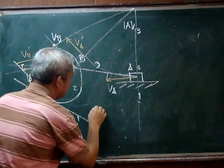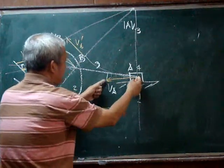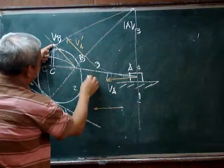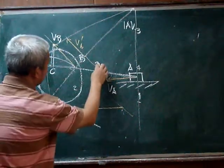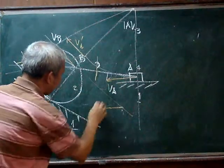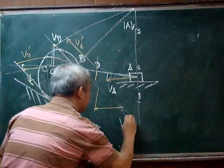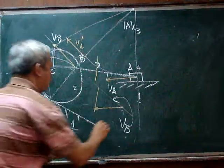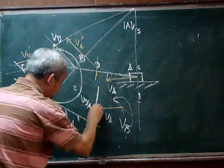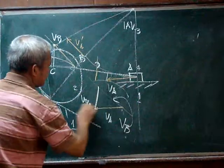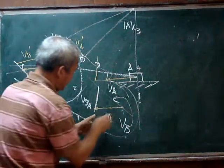If we determine it by using the relative velocity method, we can transfer the velocity of A here. The velocity of B must be along that direction, and the relative velocity of B with respect to A must be perpendicular to that line. So we can draw that line here. This now is the velocity of B, and this is the velocity of A. The velocity of B with respect to A is this particular vector. This is our velocity polygon. The velocity of C must be along that direction.